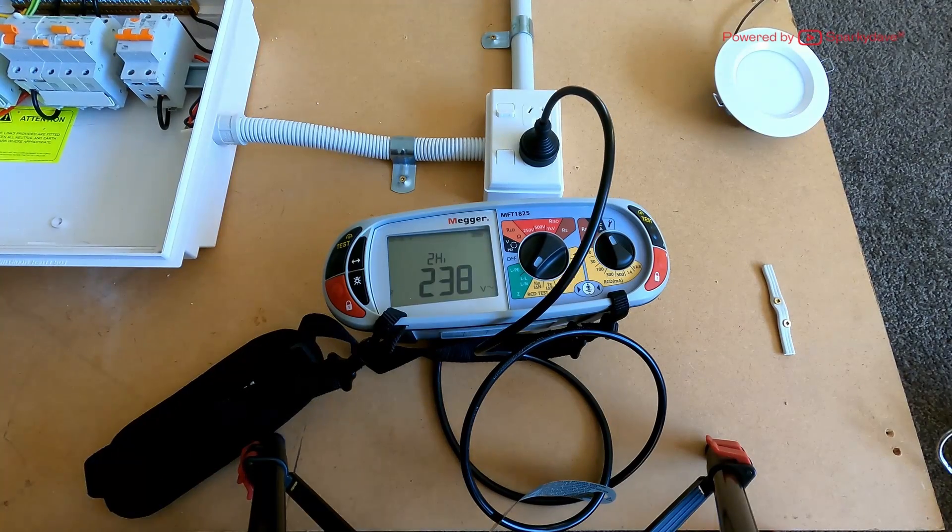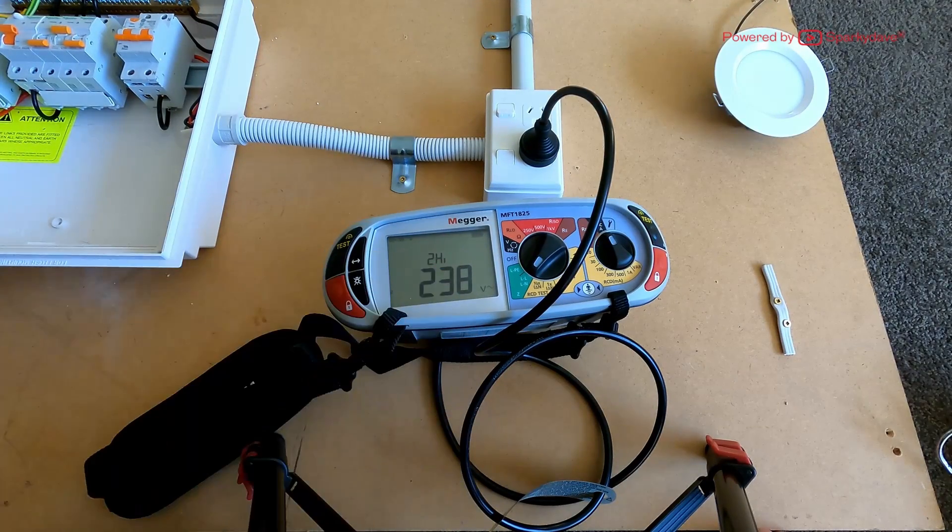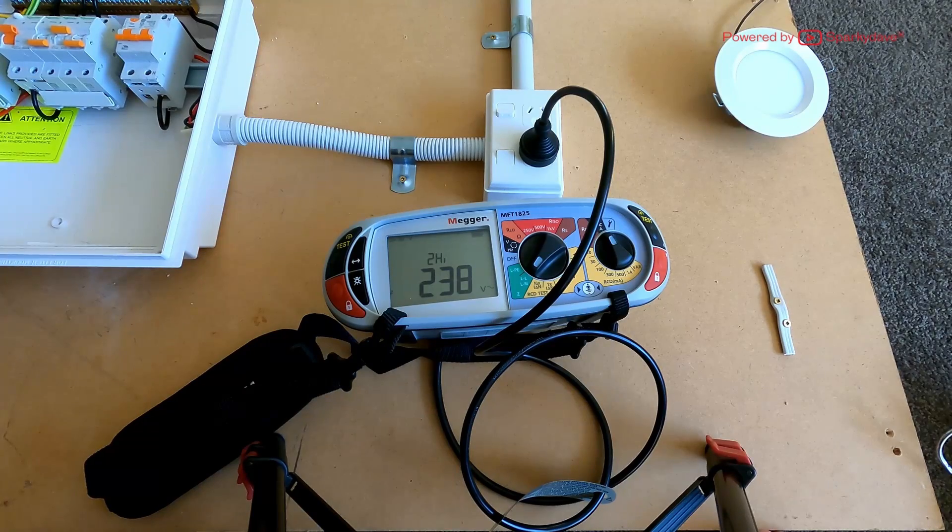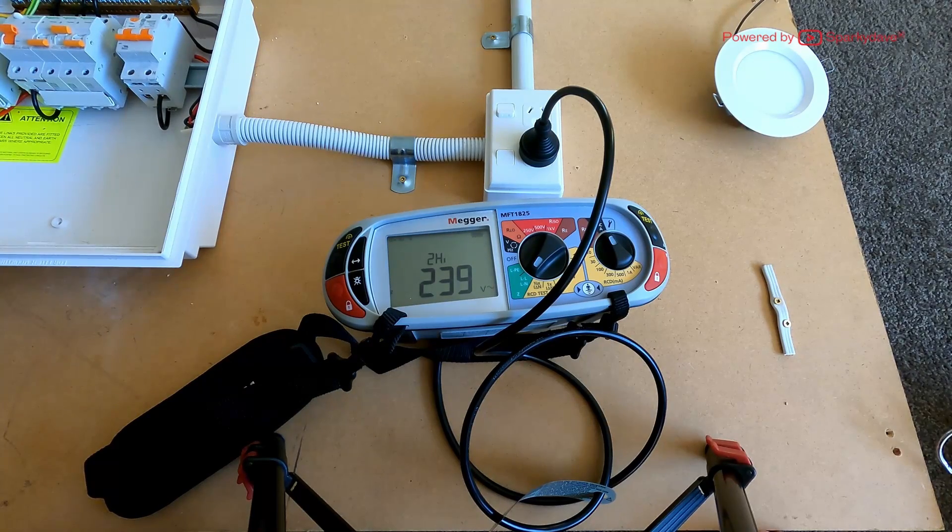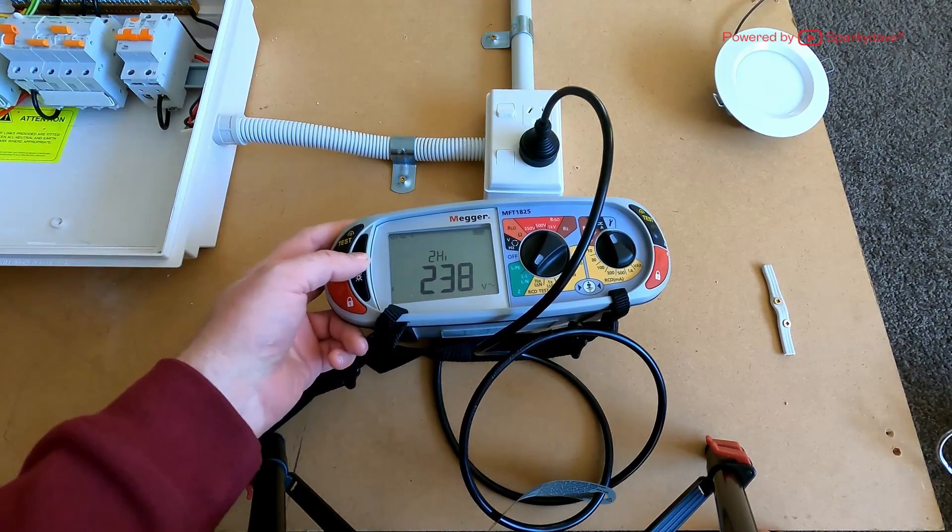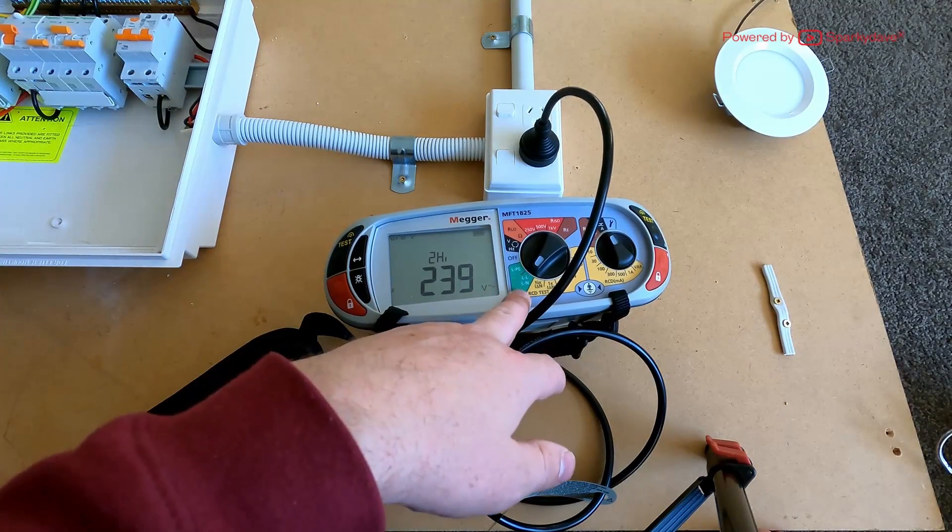Then we put it on line to neutral. Now line to neutral test is always your two lead high current test, because it's the most accurate and fastest test you'll be able to do. You can't change it. The high current test on the neutral is not going to trip your RCD. 1.05 ohms.